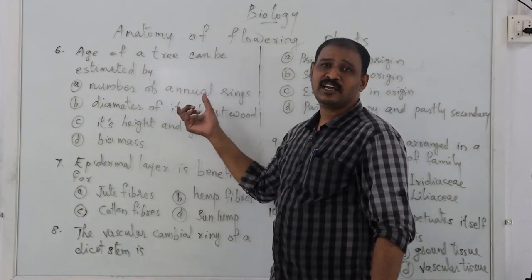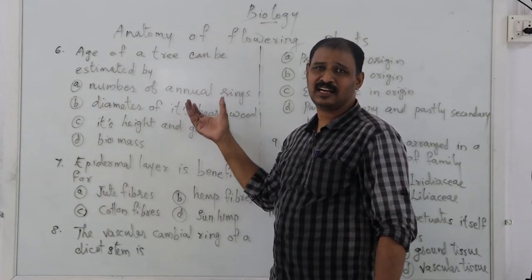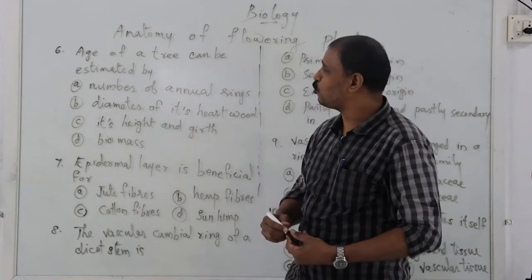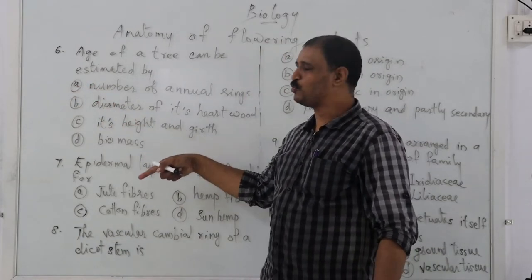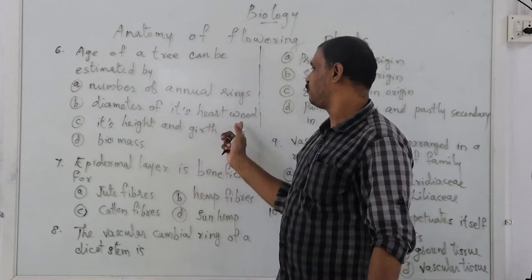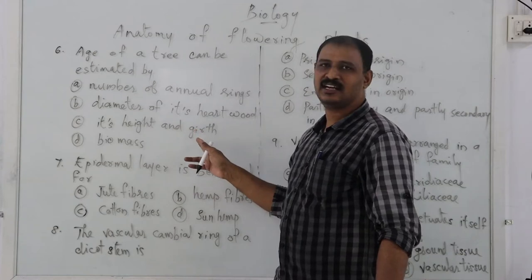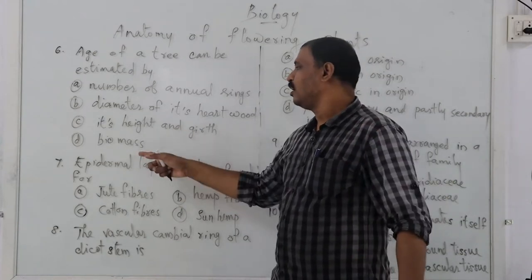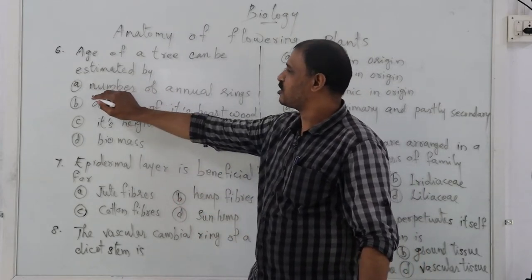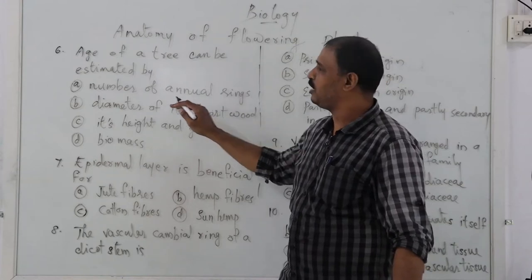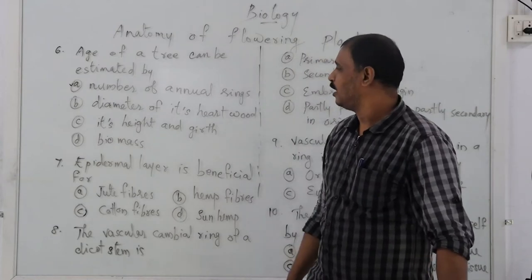By counting the number of annual rings we can estimate the age of a plant or tree. The correct option is option A — number of annual rings.